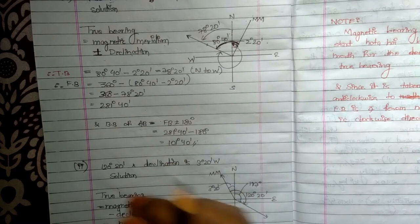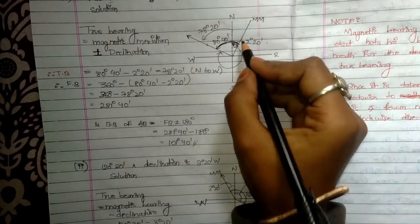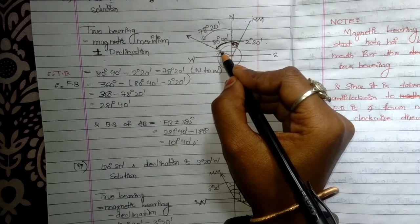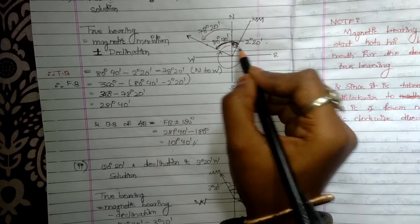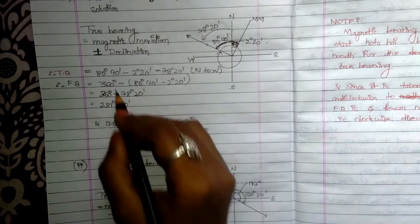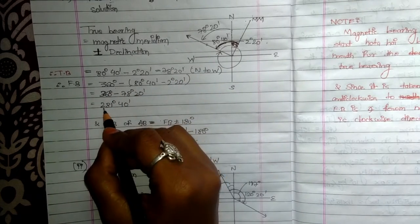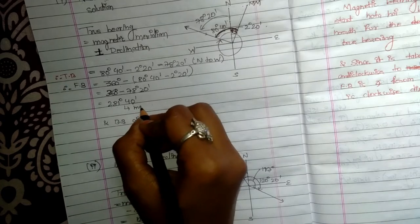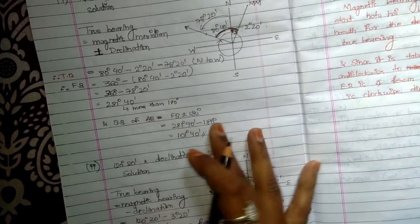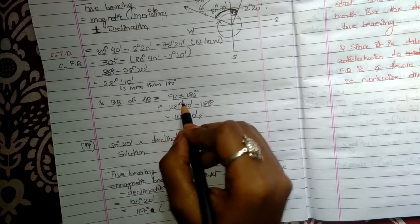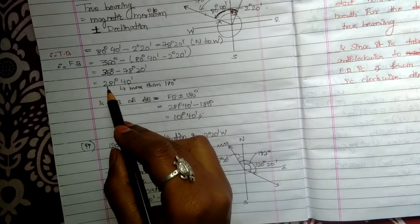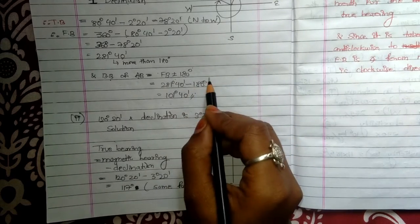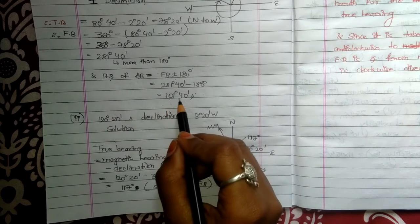Fore bearing is from north, measured in the clockwise direction. The angle is 78 degrees 20 minutes north to west. From north to south the line is 360 degrees, so 360 degrees minus 78 degrees 20 minutes equals 281 degrees 40 minutes. Since 281 degrees 40 minutes is more than 180 degrees, back bearing equals FB minus 180 degrees, which gives 101 degrees 40 minutes.